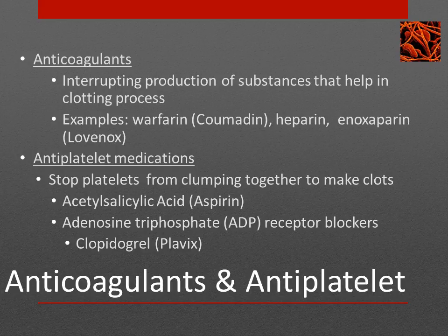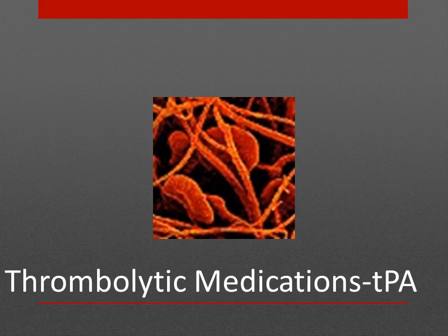When patients are on antiplatelet or anticoagulant medications, it is really important that they learn about signs of bleeding and precautions, which include limiting vitamin K. Vitamin K plays a key role in helping the body clot and preventing excess bleeding, so it makes sense that patients should avoid foods high in vitamin K when taking blood thinners. Foods that are high in vitamin K are mainly green leafy vegetables.